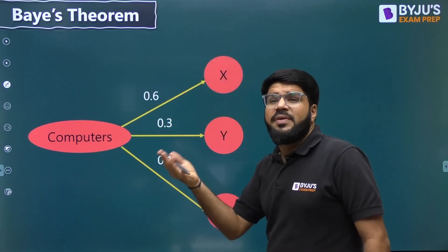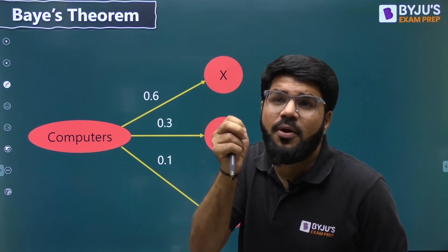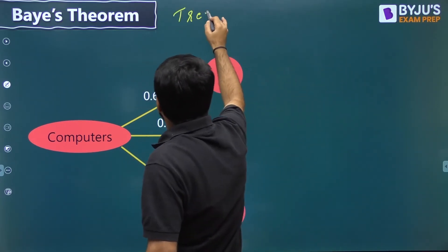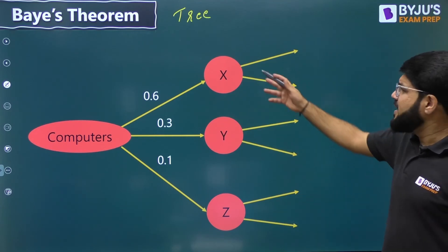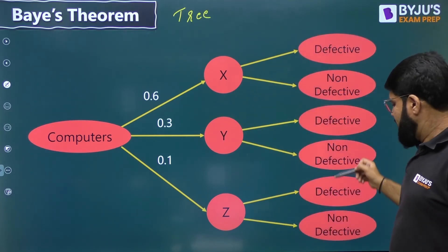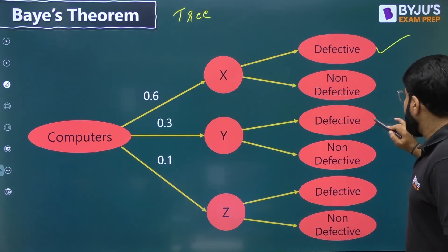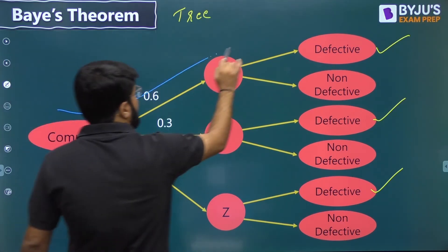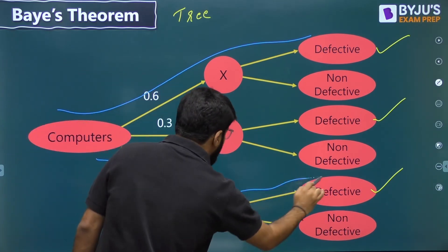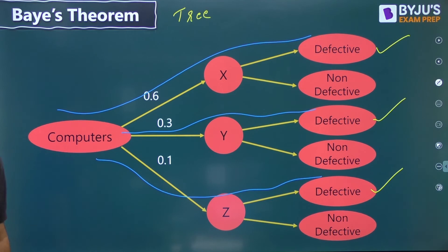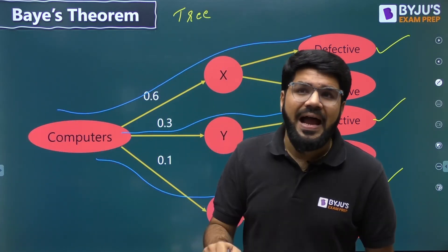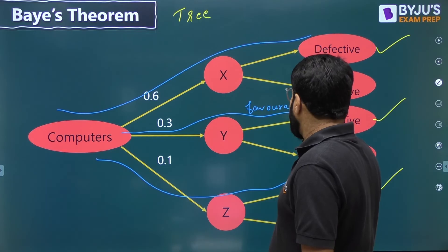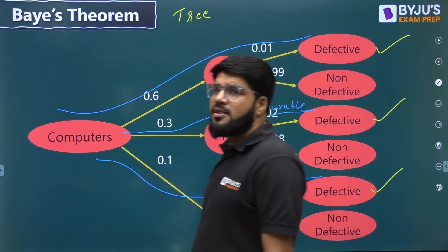In the tree, the first level has three branches: X (0.6), Y (0.3), Z (0.1). From each company, a computer may be defective or non-defective. The probability of defective for X is 0.01, for Y is 0.02, and for Z is 0.03 — non-defective is 1 minus those values. Since the computer is given as defective, the total paths are three defective paths. What is the probability it is from company Y? The second path is favorable.